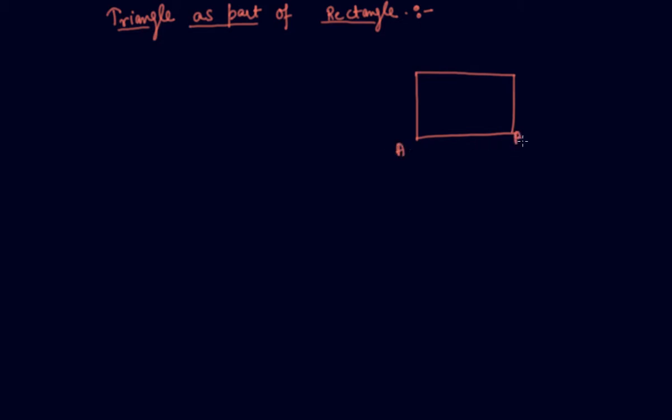Students, this is a rectangle of side ABCD. This is length and this is breadth of rectangle. And if I join this diagonal AC, what I will get here is this is triangle 1 and this is triangle 2.